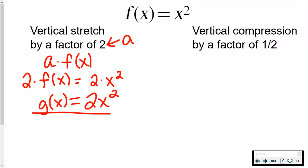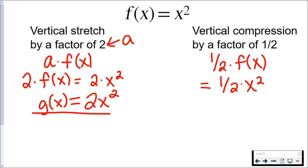Similarly, with a vertical compression, it's the same steps. I'm multiplying all of my y's by 1 half, which means I'm multiplying all of f of x by 1 half. Since f of x is x squared, I'm just replacing f of x with x squared, and there's nothing to simplify, so it's just 1 half x squared.